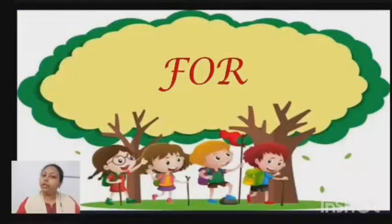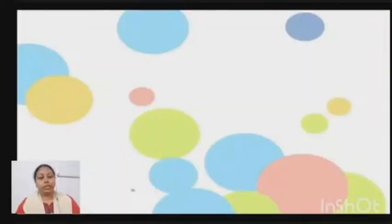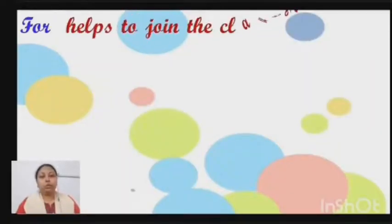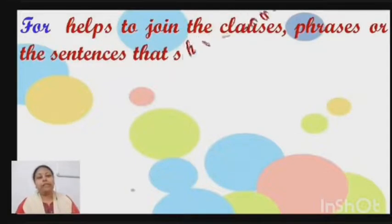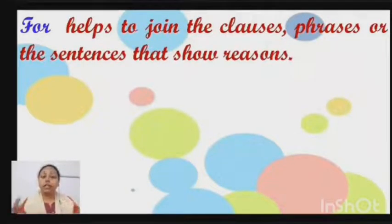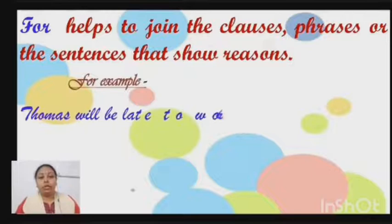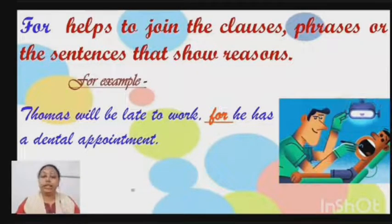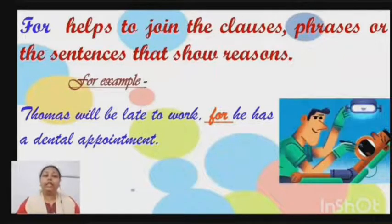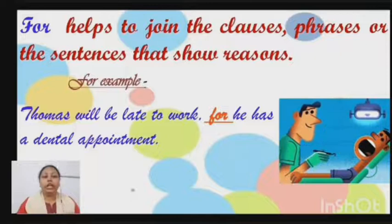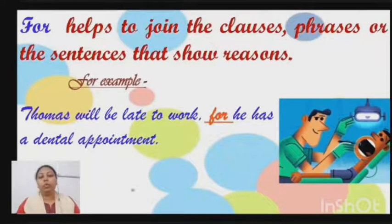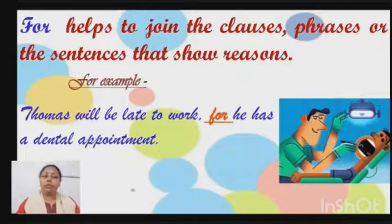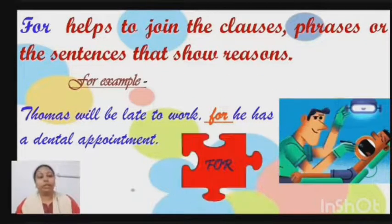The first one is 'for'. For helps us to join the clauses, phrases, and sentences that show reasons. For example: 'Thomas will be late to work, for he has a dental appointment.' Here you can clearly see that 'for' is used when we are giving a reason for Thomas being late to work today.